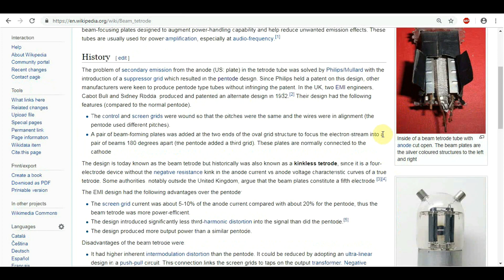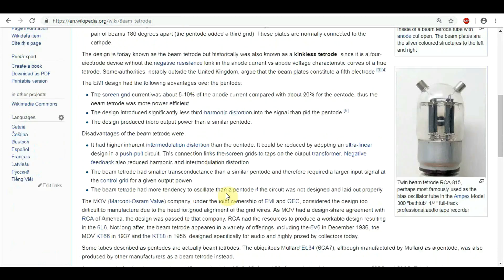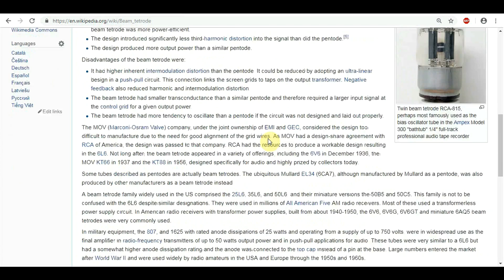Back in the 30s, the pentode design was owned by the Philips Mollard company. Since nobody else was allowed to make it without paying royalties, the boffins at EMI came up with this beam tetrode design, which was different, but the same. This functions differently than the normal pentode. It's more efficient, has lower harmonics, but needs larger input signals.